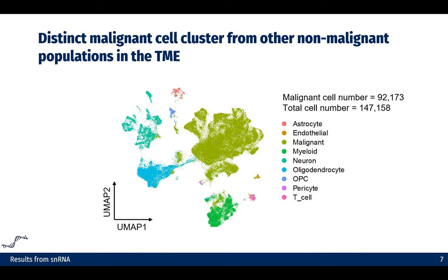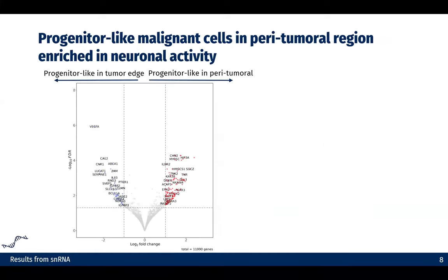For the downstream analysis, we first want to focus on the malignant population. From previous literature, we know that there is an enrichment of progenitor-like cells towards the tumor edge. In order to make it a fair comparison, we took only the progenitor-like malignant cells in the peritumoral region and the tumor edge. By doing this comparison, we identified differentially expressed genes as shown on this volcano plot.